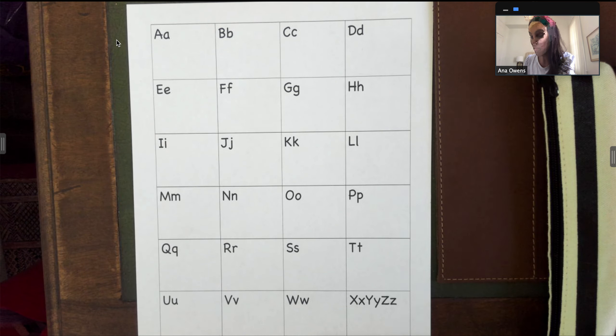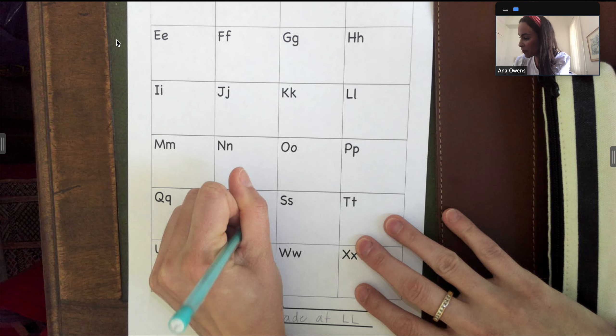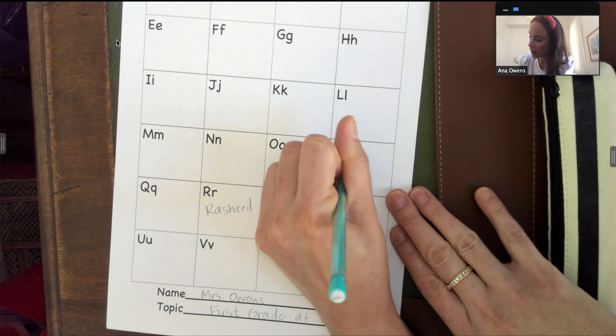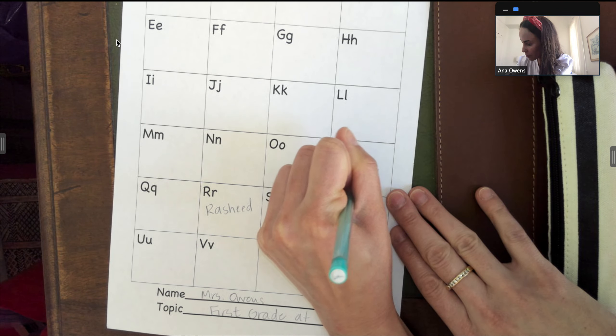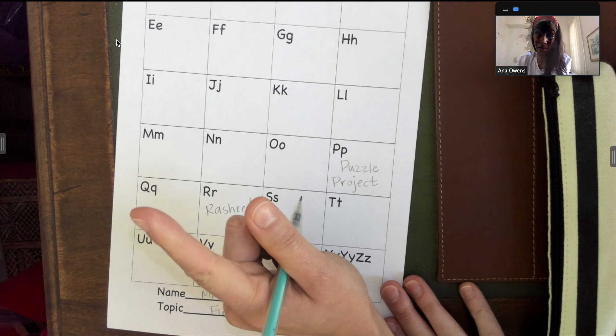So for example, R makes me think of Rasheed. P makes me think of puzzle project or poetry or the playground.